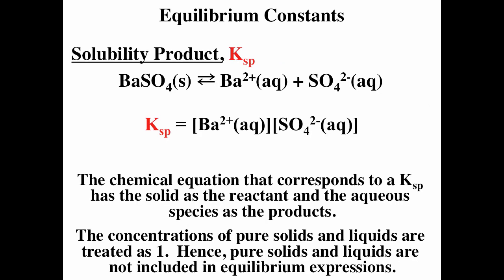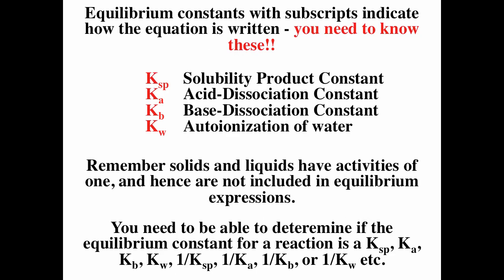We also talked about solubility products before. Remember, the solubility product is an equilibrium constant, Ksp, where you have an ionic solid going to aqueous ions. Solubility is different — solubility is the amount of stuff that can dissolve in a given amount of liquid. You should be able to recognize and write down the reactions for Ksp, Ka, Kb, Kw, 1/Ksp, 1/Ka, 1/Kb, and 1/Kw. Remember: if you flip a reaction (write products as reactants and reactants as products), you have to take the inverse of the equilibrium constant.